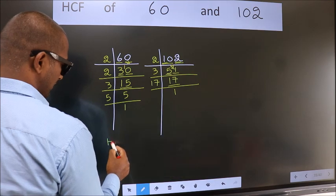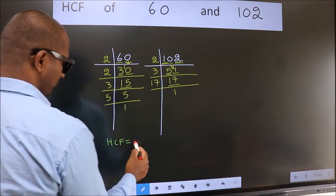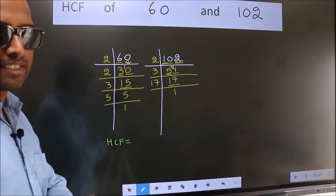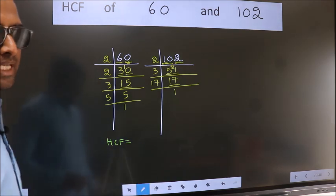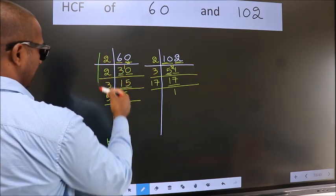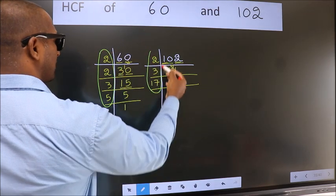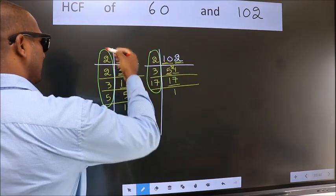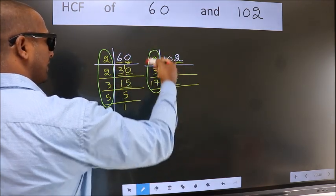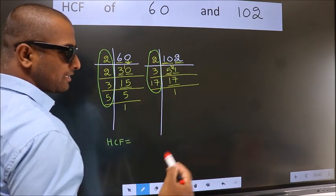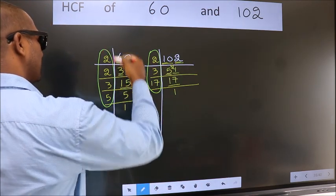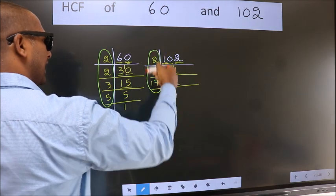Therefore, our HCF is. HCF is the product of the numbers which should be present here and also here, here and here. So now, let us find the numbers which should be present here and here.